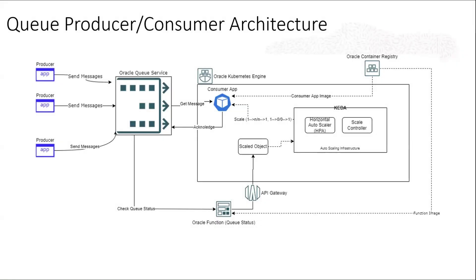Let's talk about one of the solution architectures we have for Oracle queue service, which is a typical producer-consumer scenario. This is pretty common in case of any asynchronous queue service. On the left-hand side, we have a producer which can be hosted anywhere — it can be a simple desktop application, a web application, or any other application interacting with the Oracle queue service.